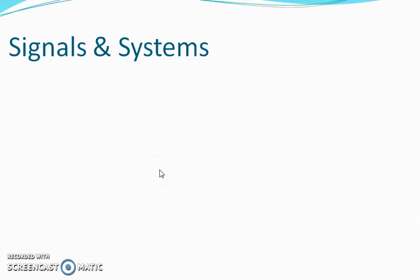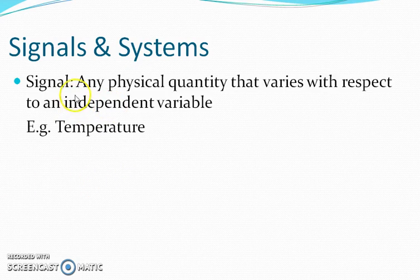Consider the temperature variation from morning till evening. In the morning the temperature is somewhat lesser, in the noon time it rises to a higher level, and again in the evening it drops. That means the heat energy is varying with respect to time. Such a parameter can be termed as a signal — a signal is defined as any physical quantity that varies with respect to an independent variable. Similarly, a voltage signal is also a best example, where the amplitude varies with respect to time.